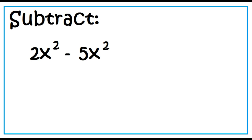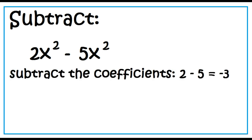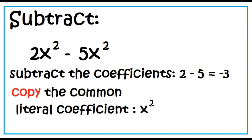2x squared and 5x squared are similar terms. So, 2x squared minus 5x squared is equal to negative 3x squared.